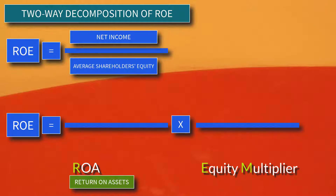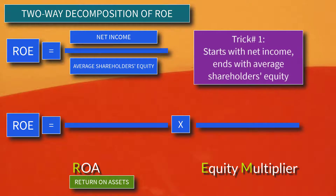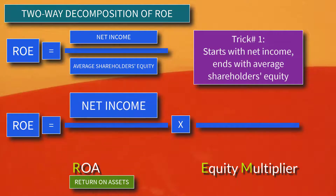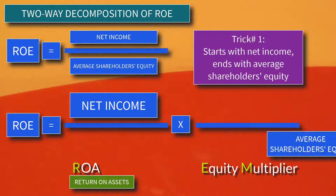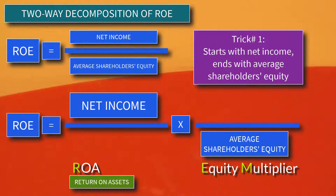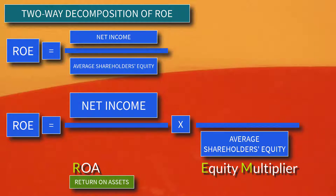To easily memorize the formula, remember these two simple tricks. The first trick is: start with Net Income and end with Average Shareholders' Equity. This means the first component should have Net Income as numerator and the last component should have Average Shareholders' Equity as denominator. For the first component, Return on Assets, what would be the denominator?